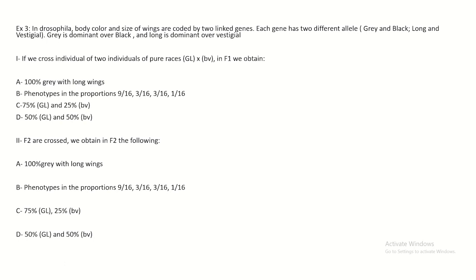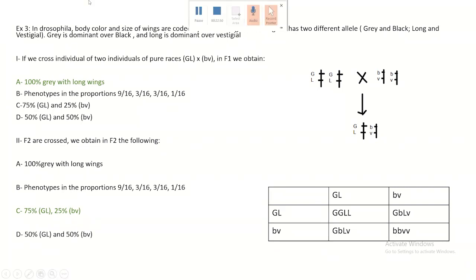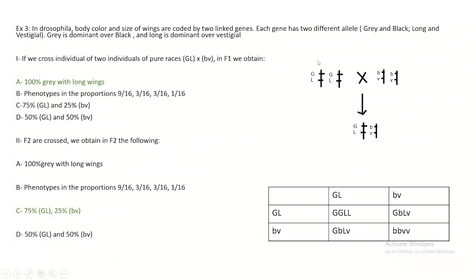In Drosophila, body color and wing size are coded by two linked genes. Grey is dominant over black, and long wings are dominant over vestigial. Crossing two pure races: GL/GL × BV/BV gives F1 all grey with long wings. Crossing F1 × F1 gives F2 with 75% grey long wings and 25% black vestigial.